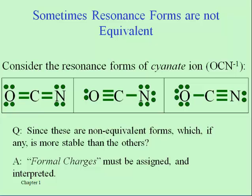The octet rule is satisfied across the board for each one. And as it says, these are not equivalent — so is one of them more like what cyanate really looks like? The answer is yes, but we need a little more help to figure that out. It turns out that third structure is the one most commonly used to represent cyanate because it is the best one.